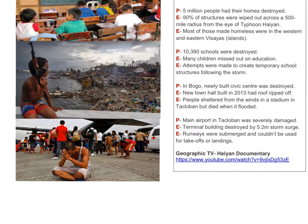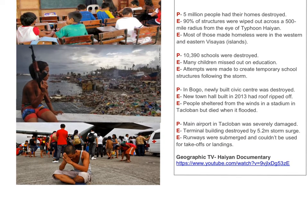10,390 schools were destroyed. Developing this point: children missed out on education, and attempts were made to create temporary school structures. You can read through the rest of these points from your e-book. There is also a link to a very good geographical TV documentary on Haiyan, which will help to broaden your knowledge outside of simply the textbook facts.